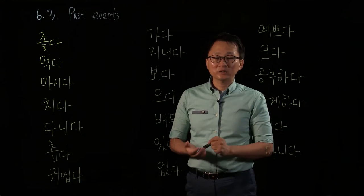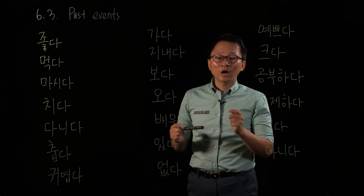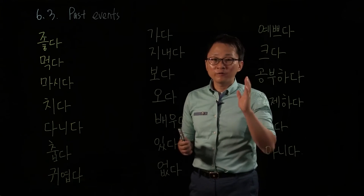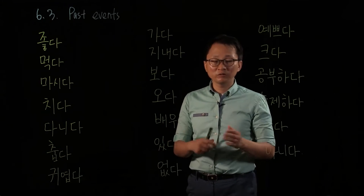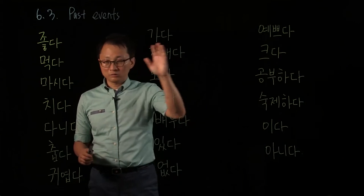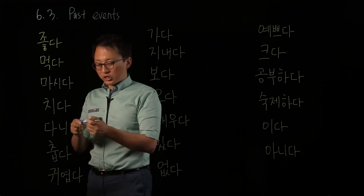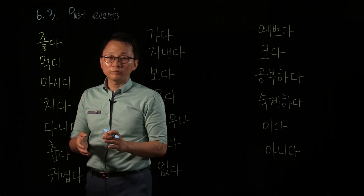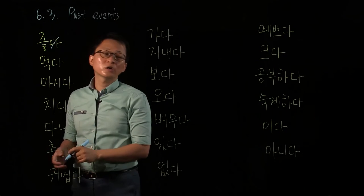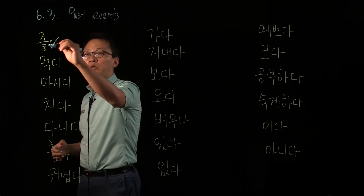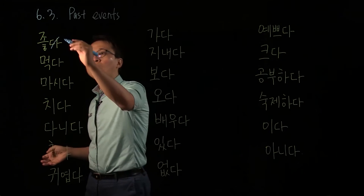Before we talk about the past form, let's review the present tense form first — the polite ending present tense form. If you know the present form, then changing that into past tense form is really, really easy. So there are verbs, adjectives, and copula. 좋다 means 'to be good,' right? Everything ends with 다, and we don't need 다 for our conjugation — it's just a dictionary form ending. We look at the last syllable: if it has O or A, we just put 아요.